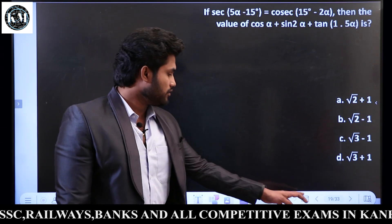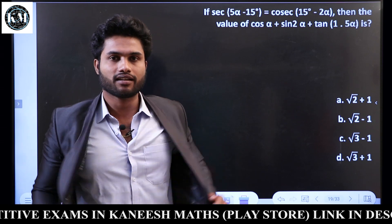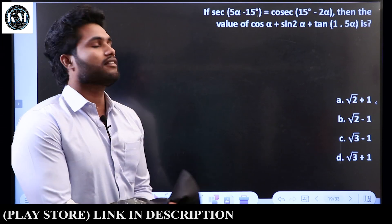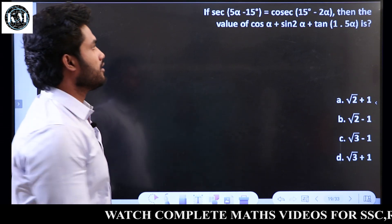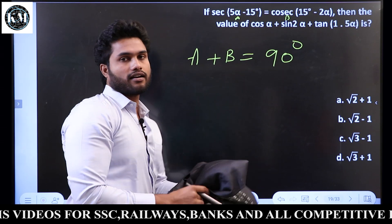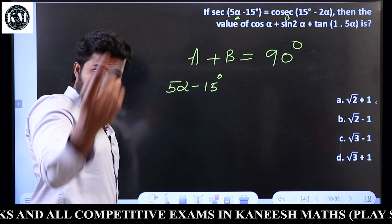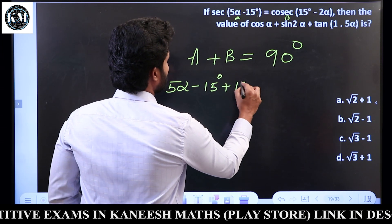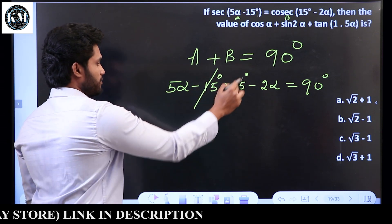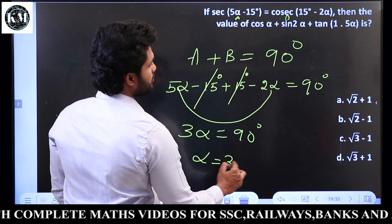Next sum — again this uses sec equals cosecant, so A plus B equals 90 degrees. We have sec(5 alpha minus 15 degrees) equals cosec(15 degrees minus 2 alpha). So A plus B: 5 alpha minus 15 plus 15 degrees minus 2 alpha equals 90 degrees. Minus 15 plus 15 cancel. 5 alpha minus 2 alpha gives 3 alpha. So alpha is equal to 30 degrees.